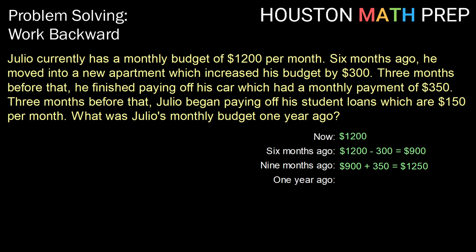Finally, three months before that, or one year ago, Julio began paying off his student loans, which we would think of as an addition to his monthly budget. But since we're working backwards, we're going to subtract that. So $1,250 minus $150 gives us a monthly budget of $1,100.